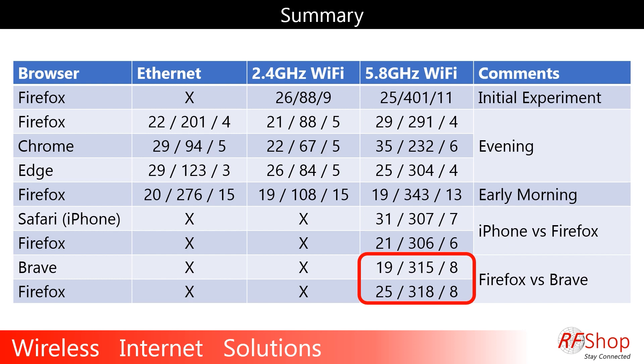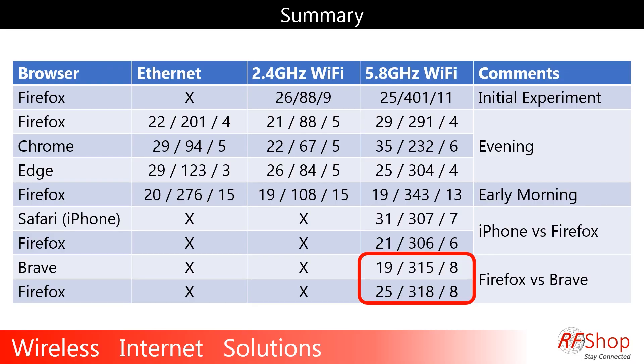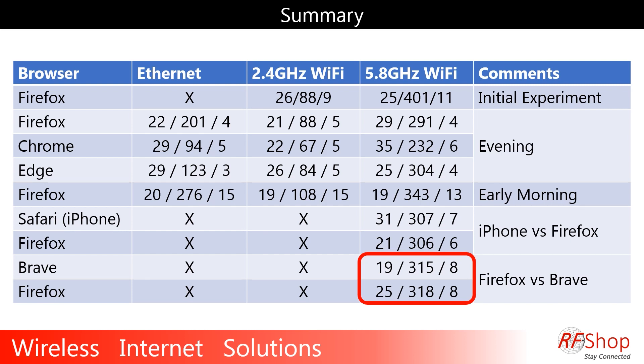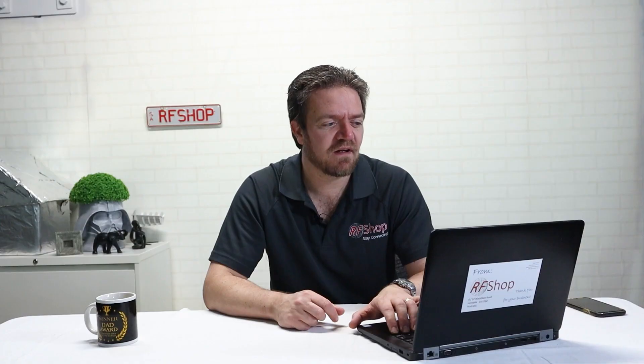The last test was the Brave browser, recommended by a security-conscious friend. Brave is interesting because you browse completely anonymously with no trackers. Testing in the early morning, I got 315 megabits with Brave versus 318 with Firefox — practically no difference. That's pretty insignificant, so both perform similarly.